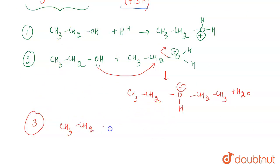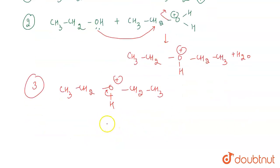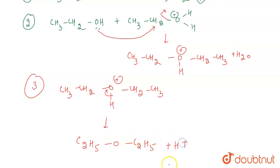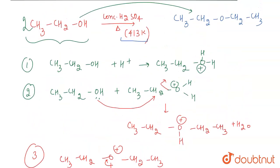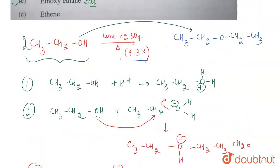In the third step, CH₃CH₂–O⁺H–CH₂CH₃ undergoes rearrangement: this bond shifts, and the final product obtained is C₂H₅–O–C₂H₅, which is diethyl ether or ethoxyethane, along with liberation of H⁺. This is how the mechanism takes place, and the correct answer is option C.